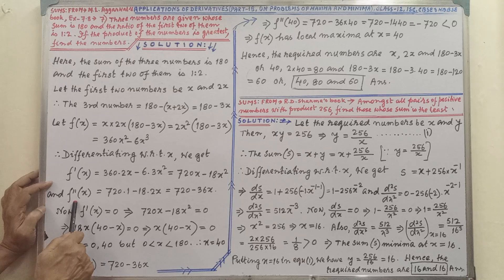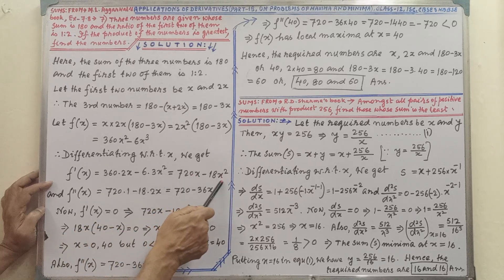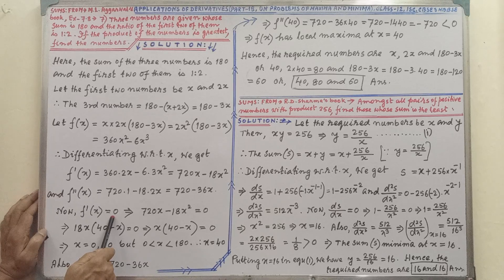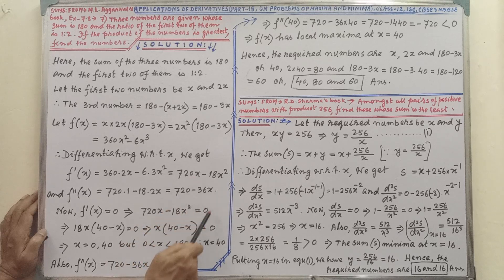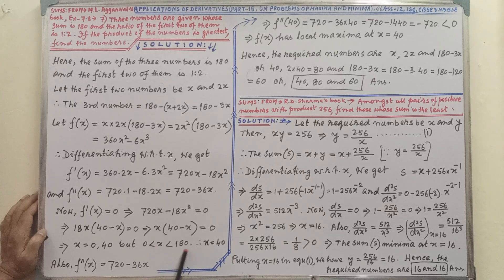Again, f''(x), the second order derivative — differentiation of x is 1 and differentiation of x squared is 2x. By simplifying, we are getting f''(x). Now, setting f'(x) equal to 0 for the turning point: 720x minus 18x squared equal to 0. Taking common and simplifying, we are getting x equal to 0 or 40. But the value of x lies between 0 and 180, therefore x equal to 40.